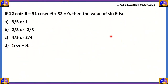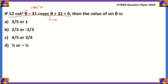Let's start. Here is your first question, asked in 2018: if 12cot²θ - 31cosecθ + 32 = 0, then find the value of sinθ. We know 12cot²θ - 31cosecθ + 32 = 0, and we can write cot²θ as cosec²θ - 1, because the trigonometric identity gives us: cosec²θ - cot²θ = 1.